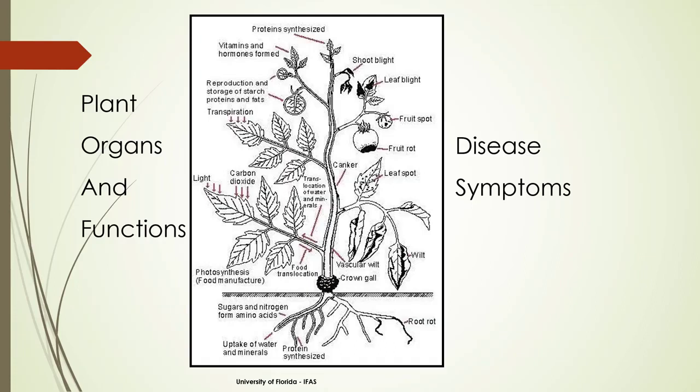Disease symptoms can interfere with some of the plant functions. Here we have crown gall, which can cause vascular wilt, canker, and fruit rot. There are many ways in which plant functions are interfered with by diseases.